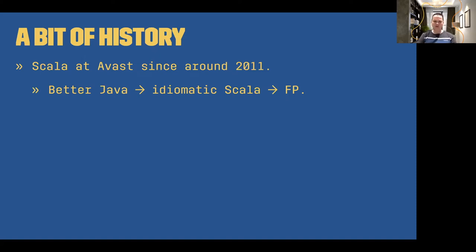Then you get to the so-called idiomatic Scala part, where you use a lot of case classes, immutable data structures, the full power of Scala collections and things like that. And then you read all these articles about functional programming and how it's great, so you get into this train of FP. And that's where we are right now — trying to write backend microservices in Scala using functional programming here at Avast.